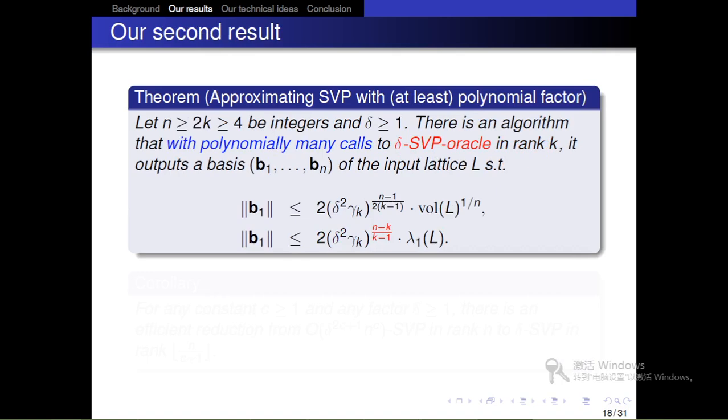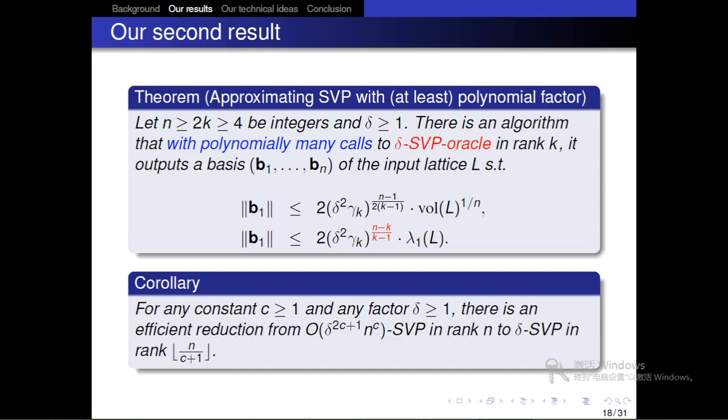Also, our second result is an algorithm for approximating SVP with at least polynomial factors. That is, let n greater than 2k greater than 4 be integers and γ greater than 1. There is an algorithm that with polynomially many calls to γ-SVP oracle in rank k, outputs a basis b1 to bn of the input lattice L such that the norm of b1 is less than 2 times γ squared gamma k to n minus 1 over 2k minus 1 times det(L) to 1 over n. Essentially, the algorithm is based on the following reduction. For any constant c greater than 1 and any factor γ greater than 1, there is an efficient co-reduction from γ to c plus 1 n to c-SVP in rank n to γ-SVP in rank n over c plus 1.